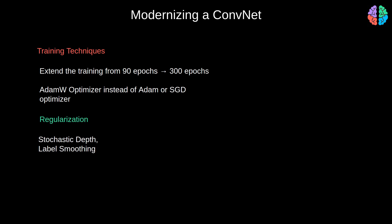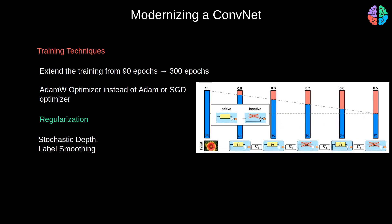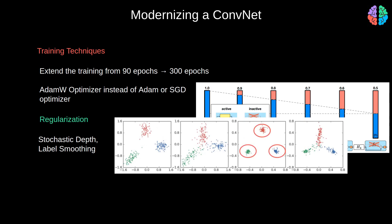They also update regularization to latest techniques like stochastic depth and label smoothing. With stochastic depth, you shrink the depth of the network as training progresses by randomly dropping ResNet blocks and bypassing their transformation with skip connections — like applying dropout to an entire block. With label smoothing, you introduce soft targets that are a weighted average of the hard targets, encouraging grouping of similar classes and improving separation between different classes. By adopting these techniques, accuracy improved from 76.1 to 78.8.